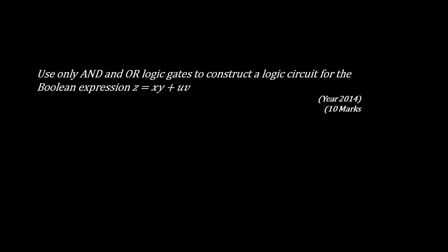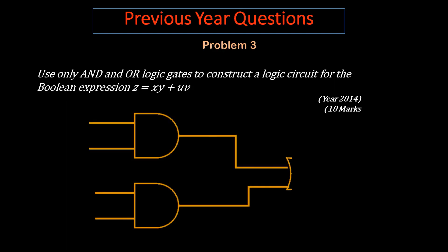Now this is our previous year question, Problem 3: Use only AND and OR logic gates to construct a logic circuit for the expression z = xy + uv. You can see that XY - dot means AND gate. This is also our U AND V gate. And this is both AND gates. Then this is addition, which is OR gate. You can see X, Y, U, V. This is our solution. Simply apply the Boolean logic and draw the circuit.